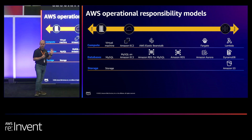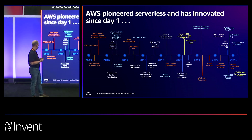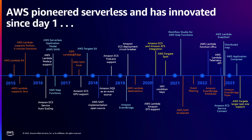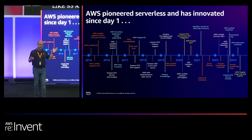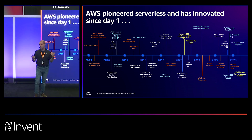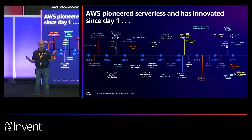We've been doing this for a long time. Lambda went GA in 2015, and we've been continuously innovating since — through Fargate, Step Functions orchestration, serverless solutions like S3, and now Aurora Serverless. This week at re:Invent we announced new innovations in Aurora Serverless, where you can now run MySQL and Postgres databases in a serverless way without having to think about instances.